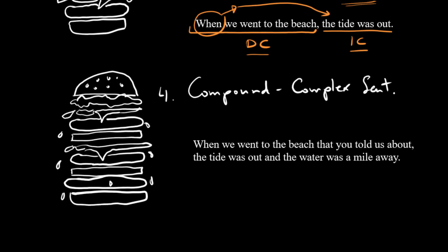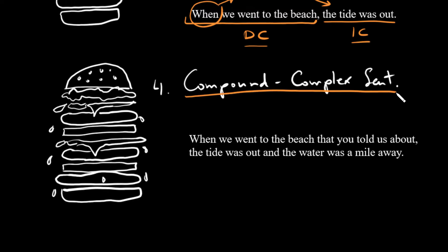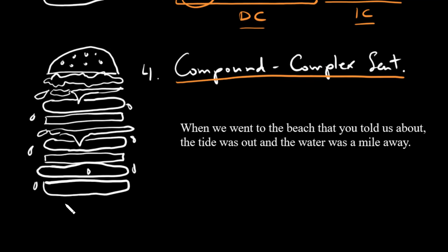And then we get to our last kind of sentence, the compound complex sentence, and you can see here that this is a massive kind of burger. It's a whole bunch of things thrown together. Not something you always want, but maybe once in a while you want something that is really going to fill you up. Okay, so what do we need for this? Well, we need two independent clauses, so that's our minimum.